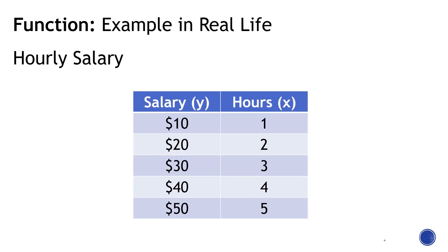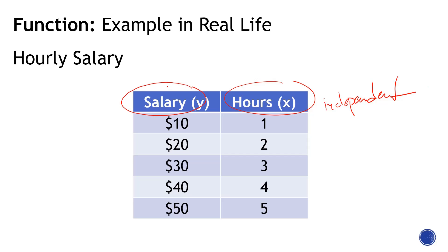Let me give you a real-life example of a function. Let's say you're working and your salary depends on the number of hours you work. Say you work an hour, you earn $10; you work two hours, you earn $20, and so on and so forth. So the time, or the hours, these are what we call the independent variable.